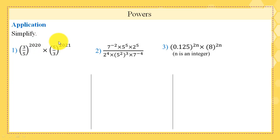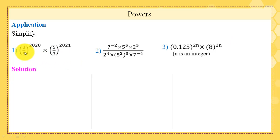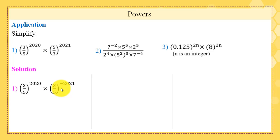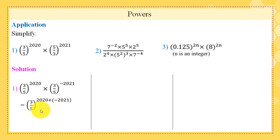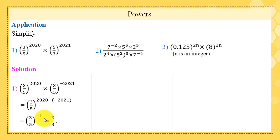Application: simplify the following expressions using properties of powers. In part 1, (3/5)^2020 times (5/3)^2021. Since (5/3)^2021 equals (3/5)^(−2021), we have (3/5)^2020 times (3/5)^(−2021). These have the same base with different powers and a times operation, so we add the powers: (3/5)^(2020 minus 2021) equals (3/5)^(−1) equals 5/3.